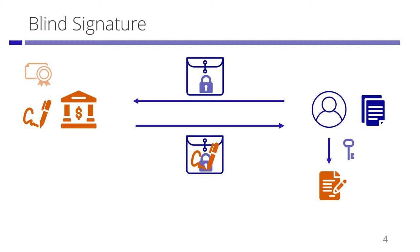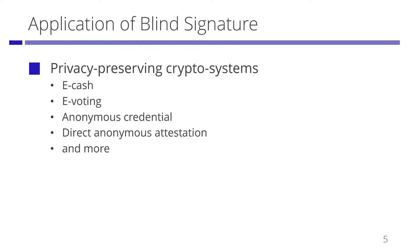The user opens the envelope and gets the signature for the message M. Blind signatures are crucial building blocks of privacy-preserving cryptosystems. We need blind signatures to achieve e-cash, e-voting, anonymous credentials, and many other privacy-preserving cryptographic protocols.